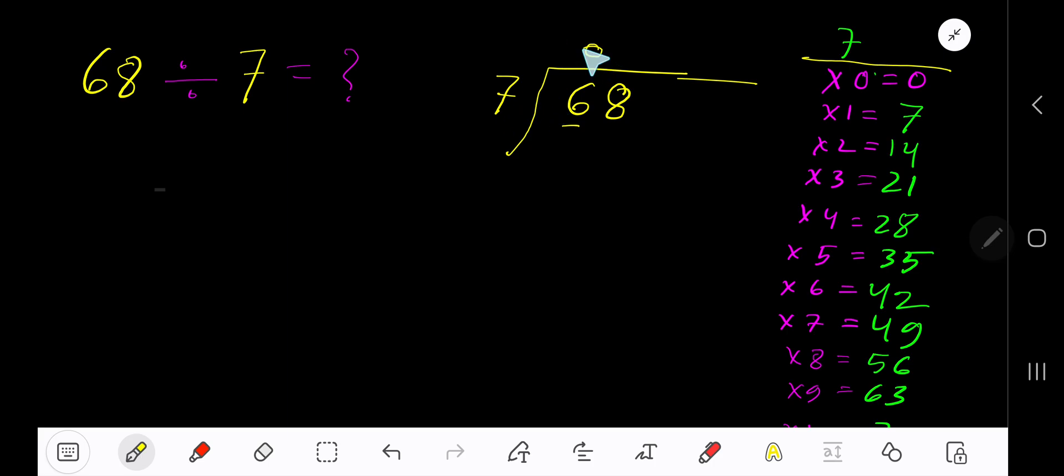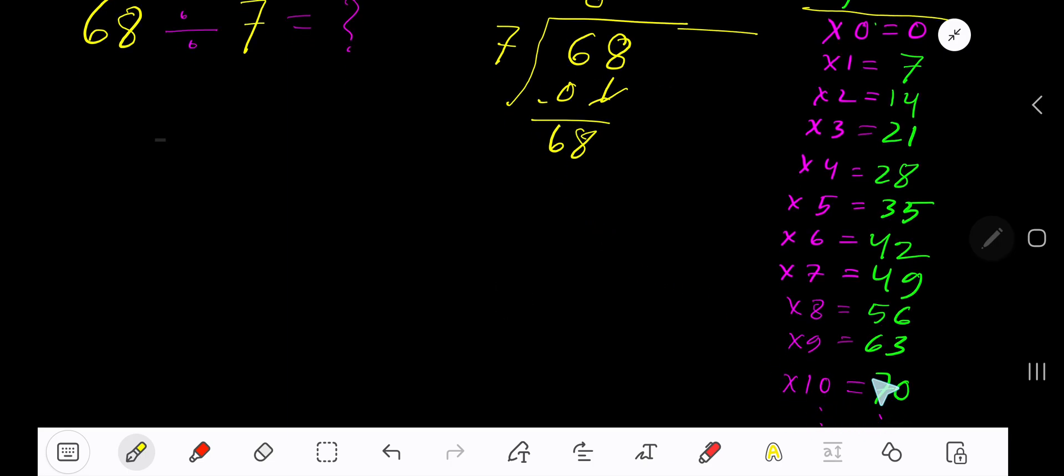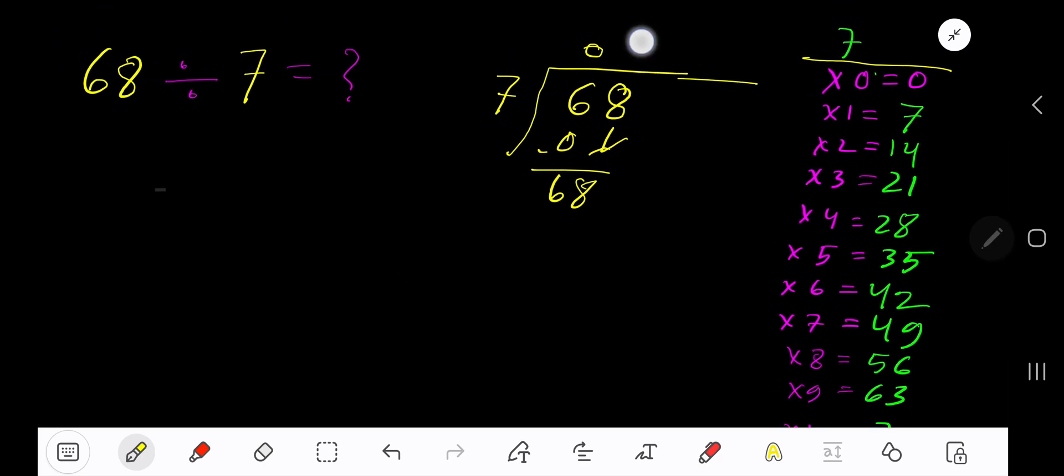0 times 7 is 0. Subtract 6. Bring down the next digit. 7 goes into 68 how many times? 10 times is 72, which is greater, so 9 times. 9 times 7 gives you 63. Subtract, you are getting 5.